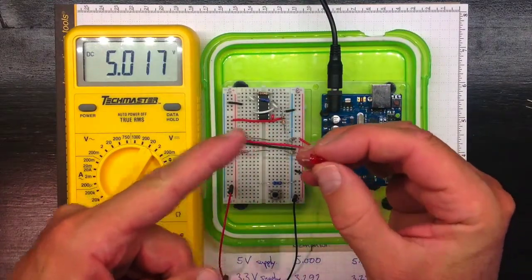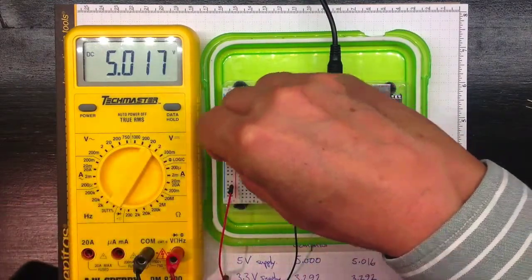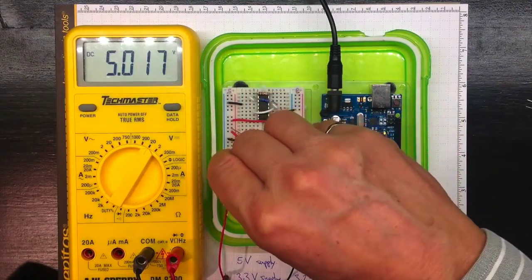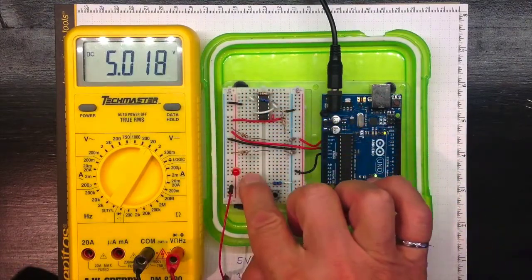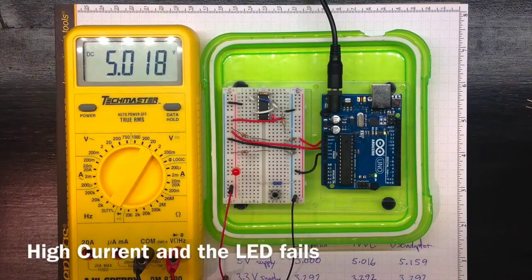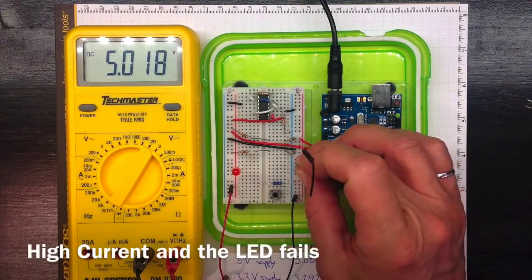The longer positive leg goes into plus five and the shorter negative leg I'm just putting into this slot here. Now I'll take the ground connection.